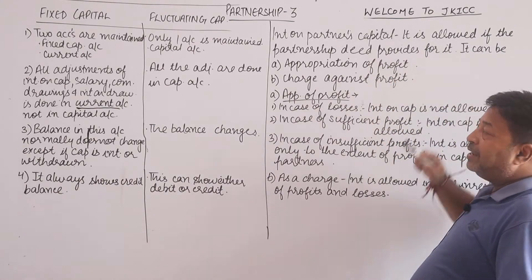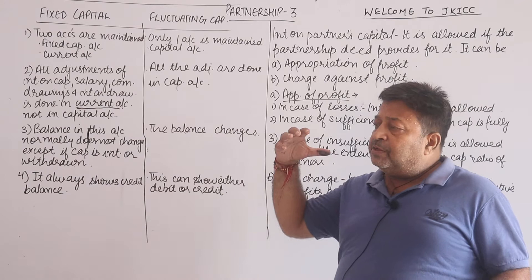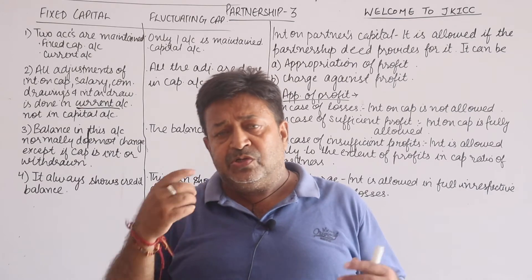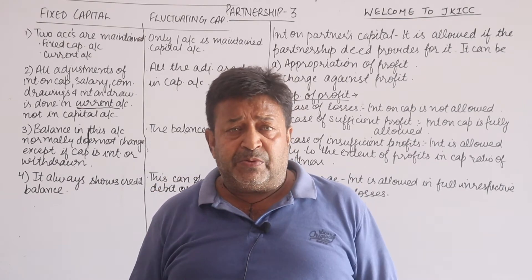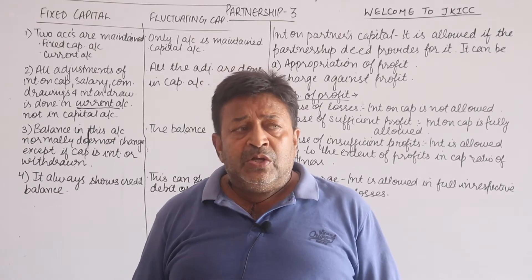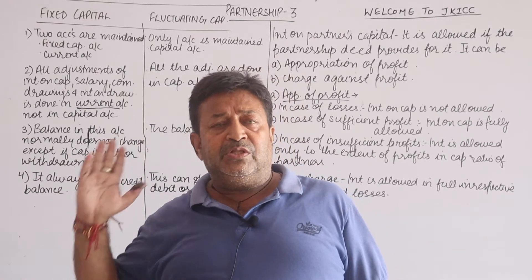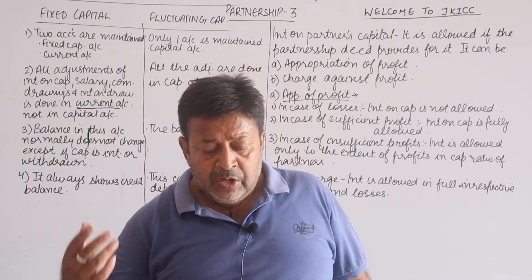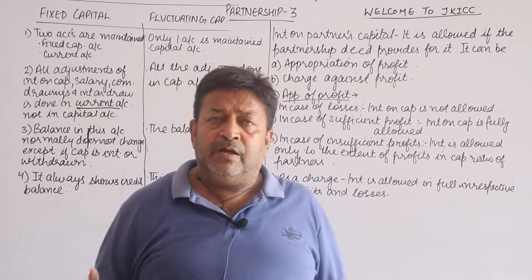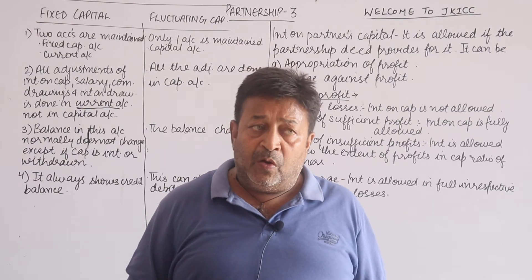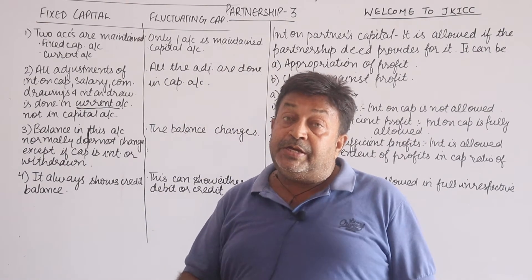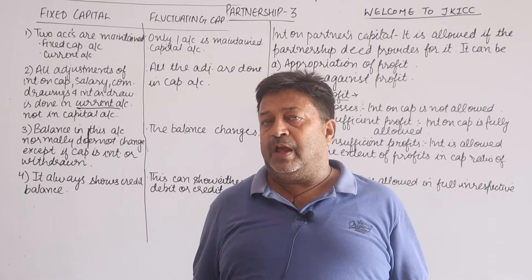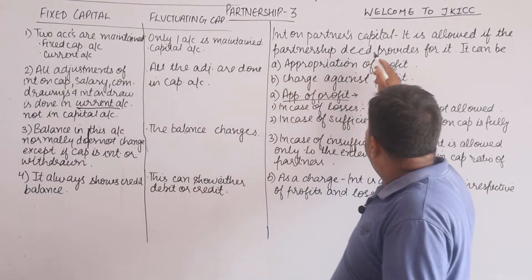Interest on capital means that when a partner introduces capital into the business, he says that if he had put this money in the bank or invested it, he would get interest. So he asks the business to pay him that interest — not talking about profits, this is separate. Since business is a separate entity, it agrees to allow interest on capital to those who have introduced capital at a fixed rate mentioned in the partnership deed.